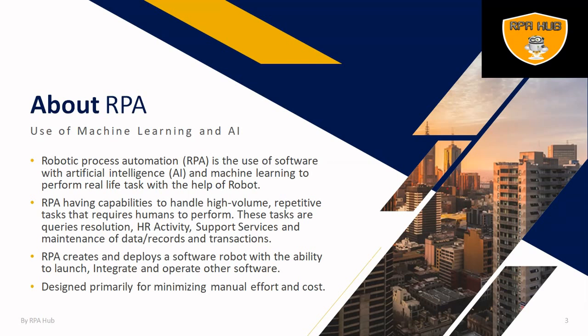So first of all, what is RPA? Robotics process automation is the use of software with artificial intelligence and machine learning to perform real life tasks with the help of robots.